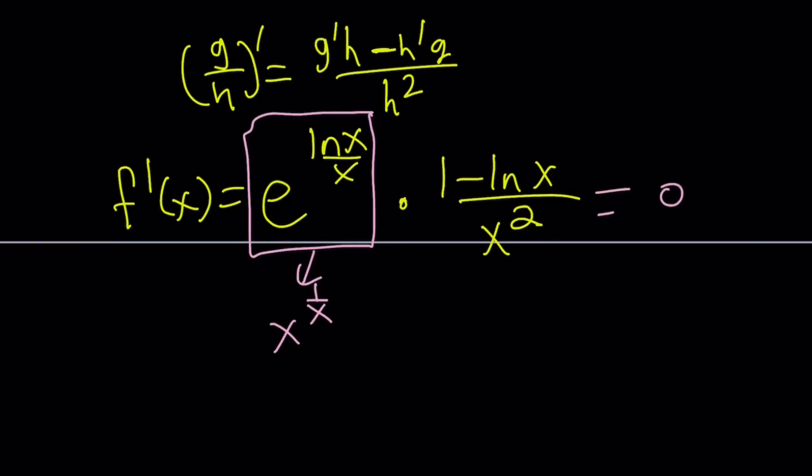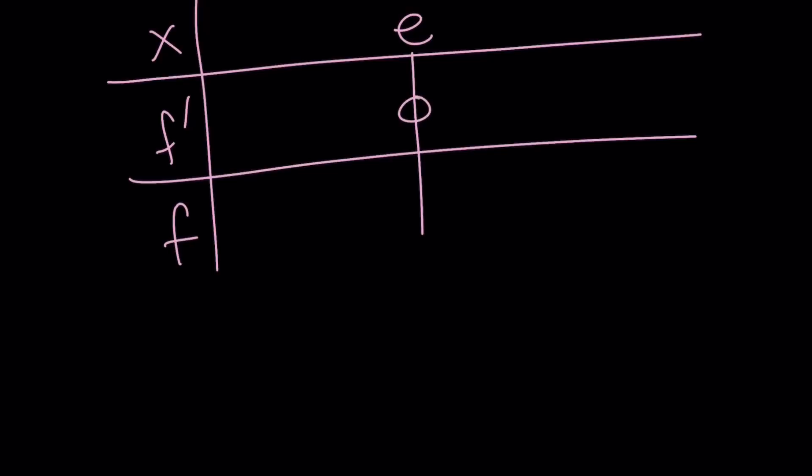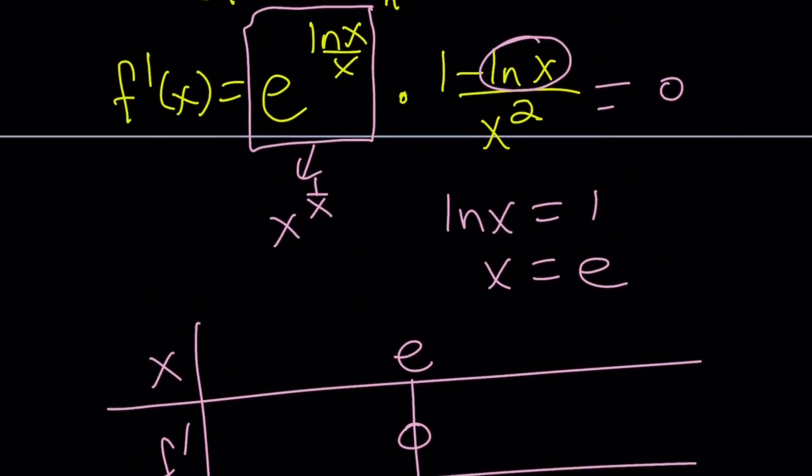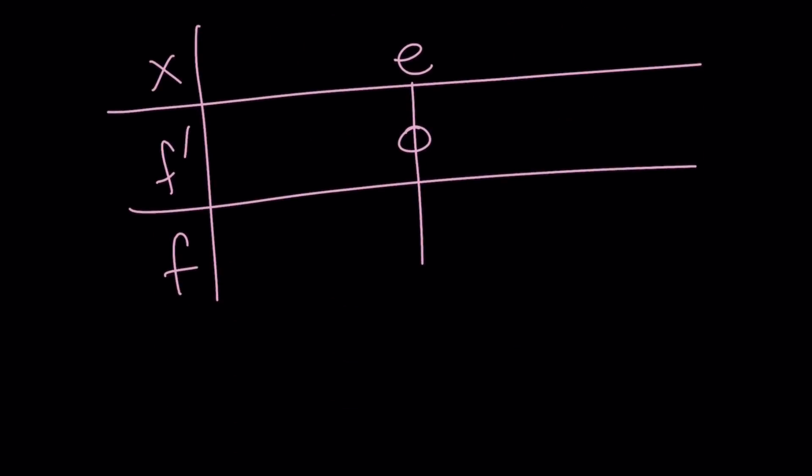So we're going to set this equal to 0, and that's going to give us ln x equals 1, which means x is equal to e. So we're going to make a graph of this function where the only root for the derivative is e. And obviously, if x is greater than e, this is going to be greater than 1, so we're going to get a negative derivative here and a positive derivative here, which means our function is going to increase and then decrease, making a max at x equals e.